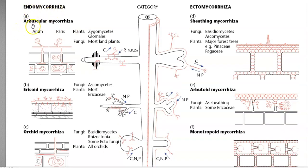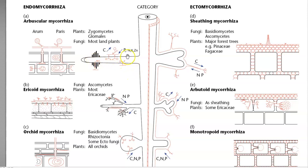Endomycorrhizal or arbuscular mycorrhizal are of two types: arum type and paris type. These fungi mainly belong to the group Zygomyces and Glomales, and are distributed in most land plants. Plants provide shelter and carbon — from root exudates — while the fungi provide phosphorus mobilization, nitrogen, potassium, and even zinc to the plant system.